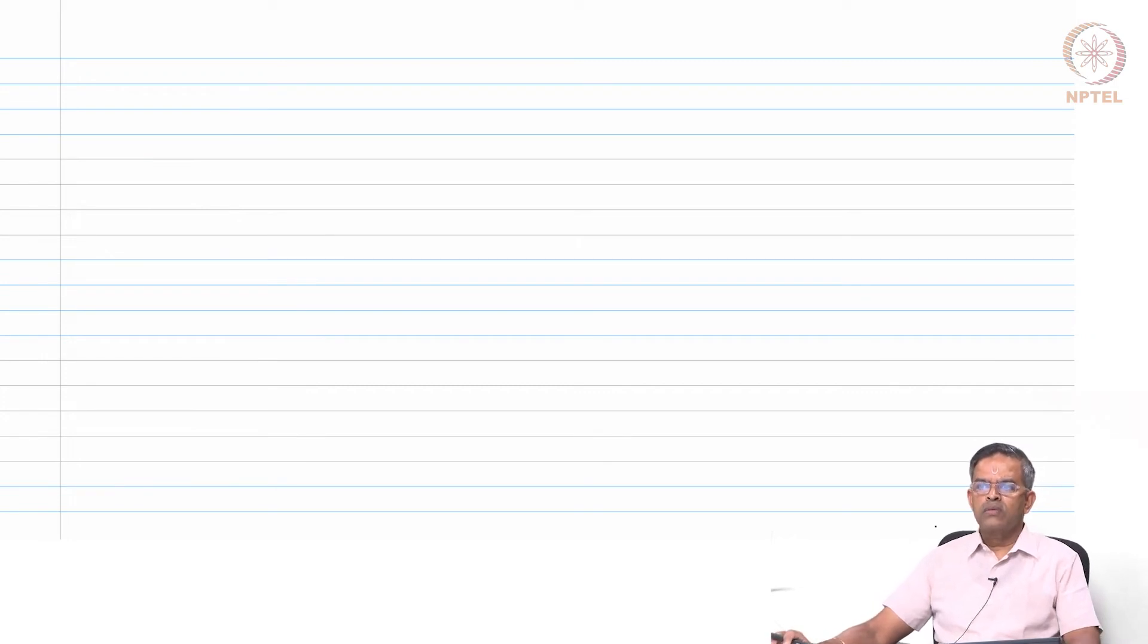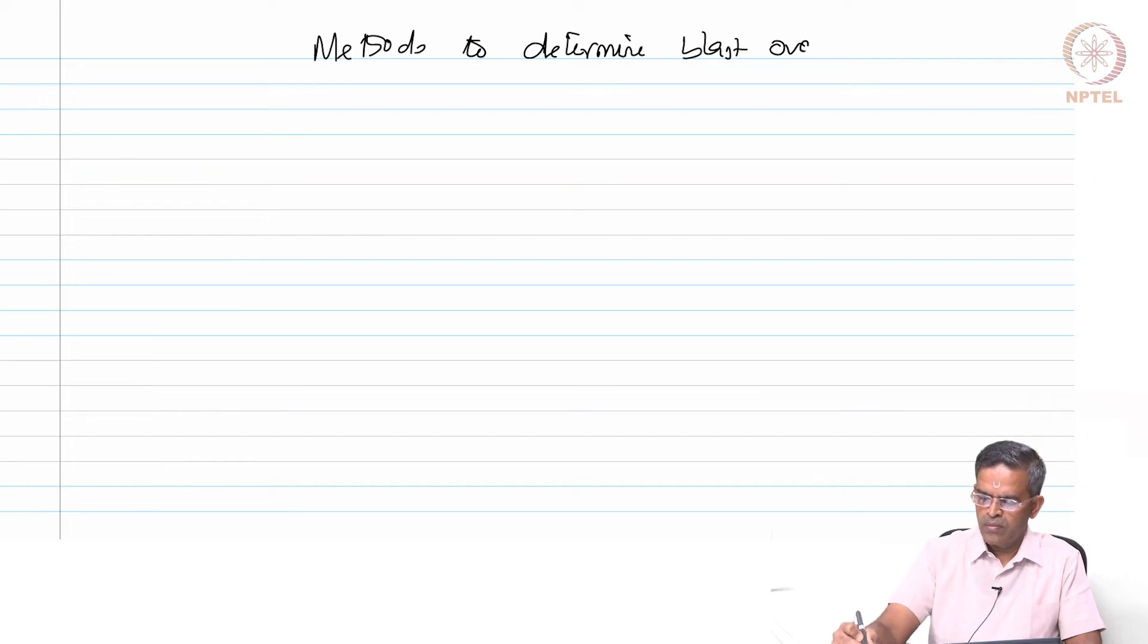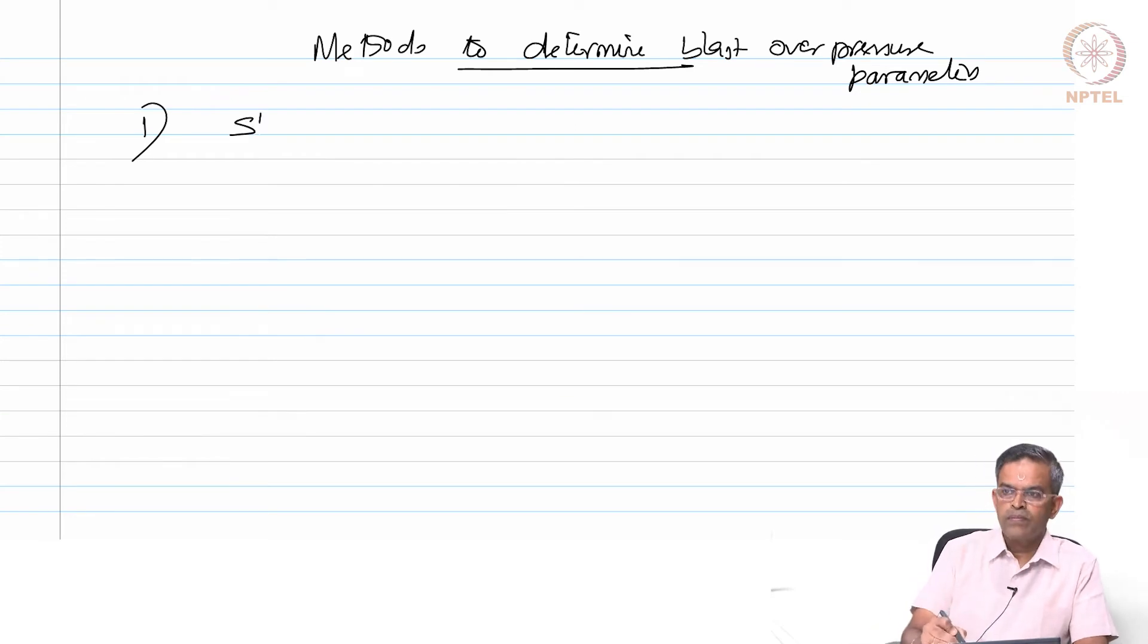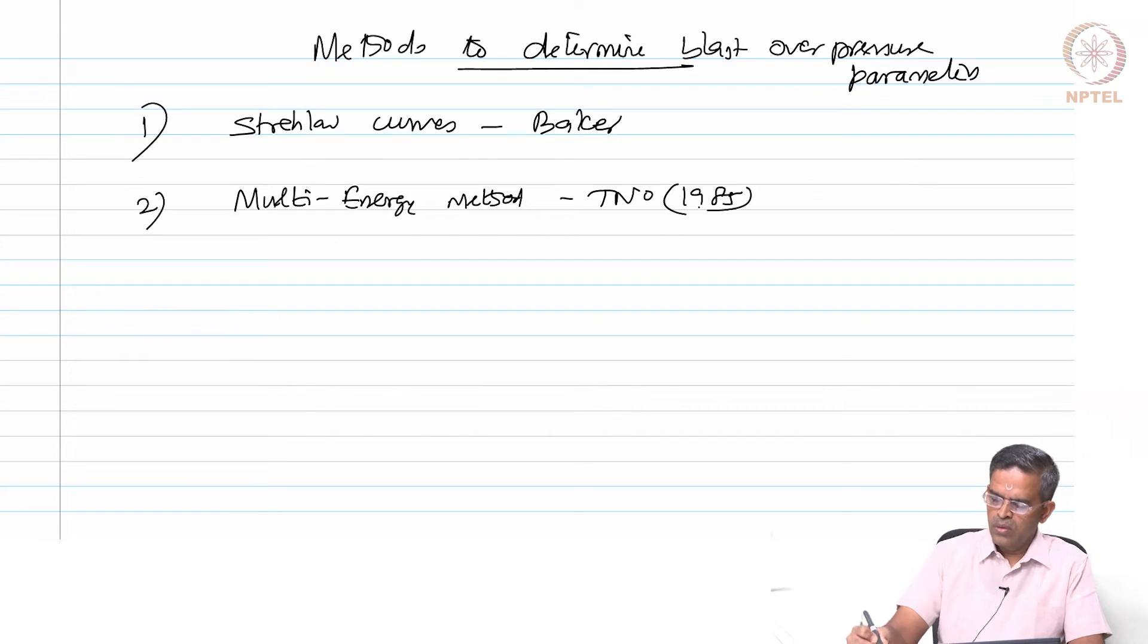Let us talk about the methods to find the blast overpressure parameters. There are two methods. One is the Sachs curves suggested by Baker. The second one is multi-energy method based on TNO 1985.